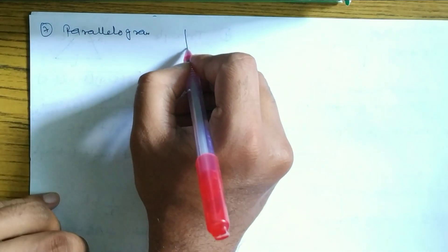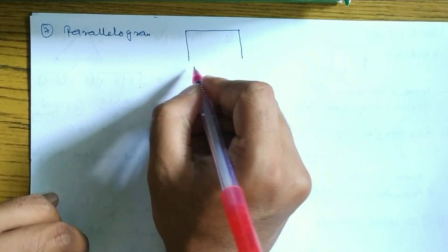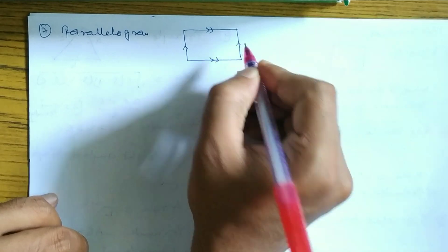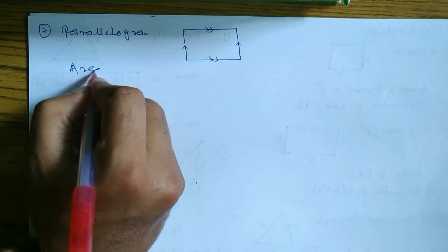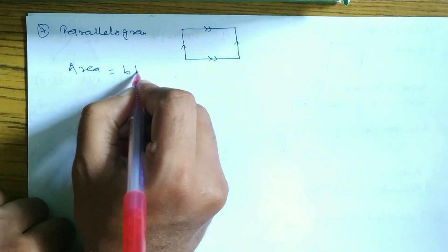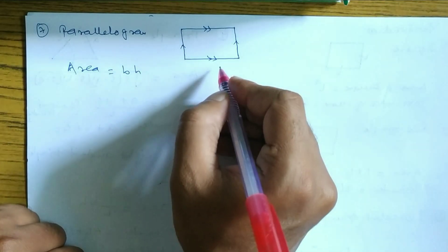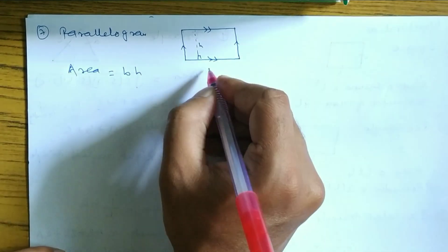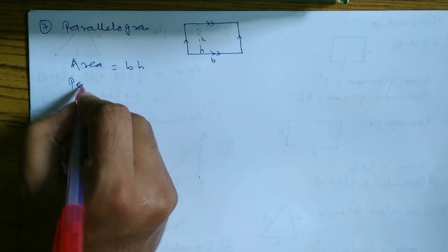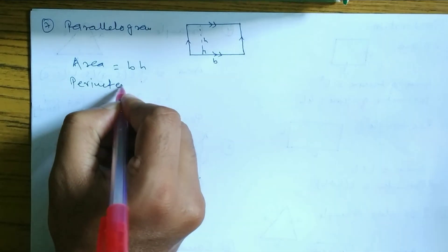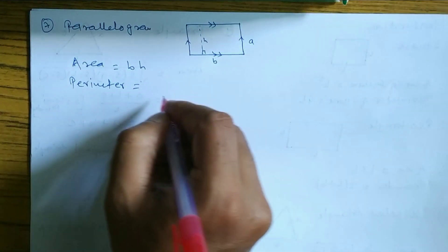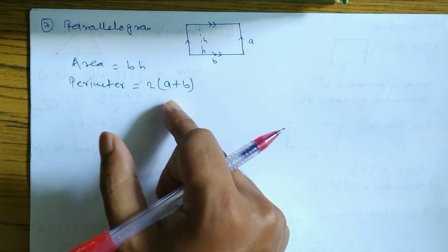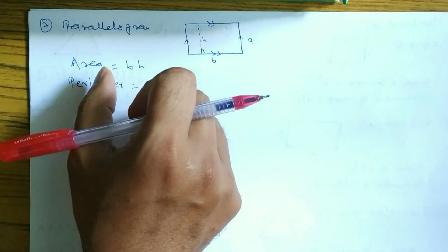Number 7 is the parallelogram. Parallelogram means opposite sides are equal and parallel, same like a rectangle. Area of parallelogram is equal to base into height — base is written as b and height as h. Perimeter is the sum of all sides: 2a + 2b, or 2(a + b).